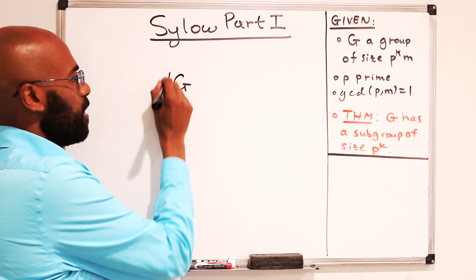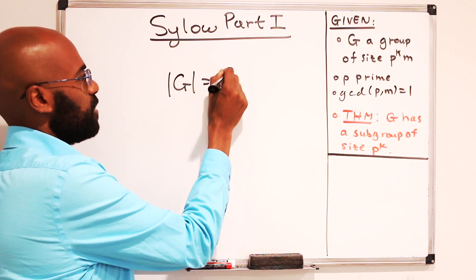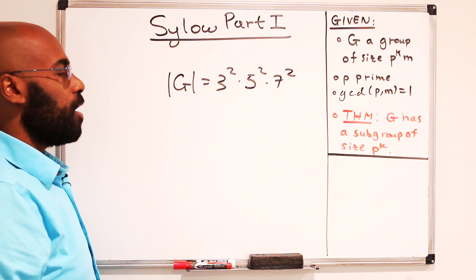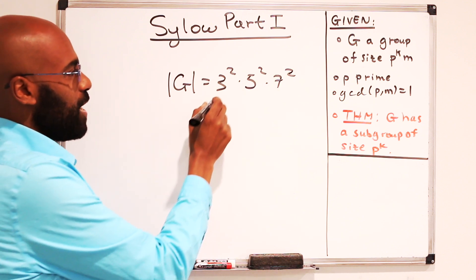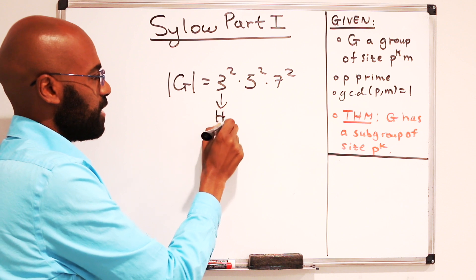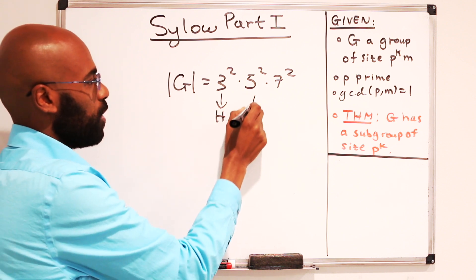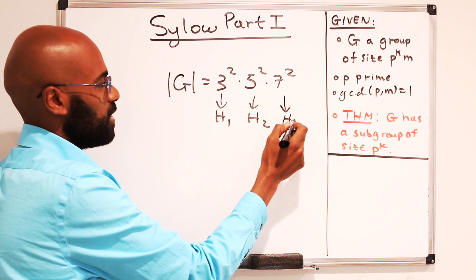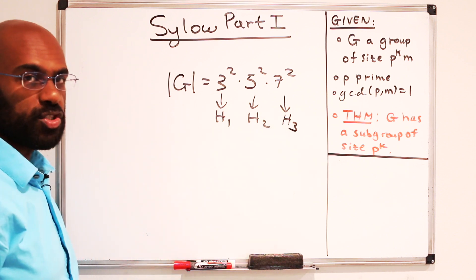So let's actually see why something like this would matter. Say you had a group G, and its size was 3 squared times 5 squared times 7 squared. What this theorem says then is you have some subgroup of size 3 squared, which I'll call H1, and then another of size 5 squared, which is H2, and another of size 7 squared, which is H3.